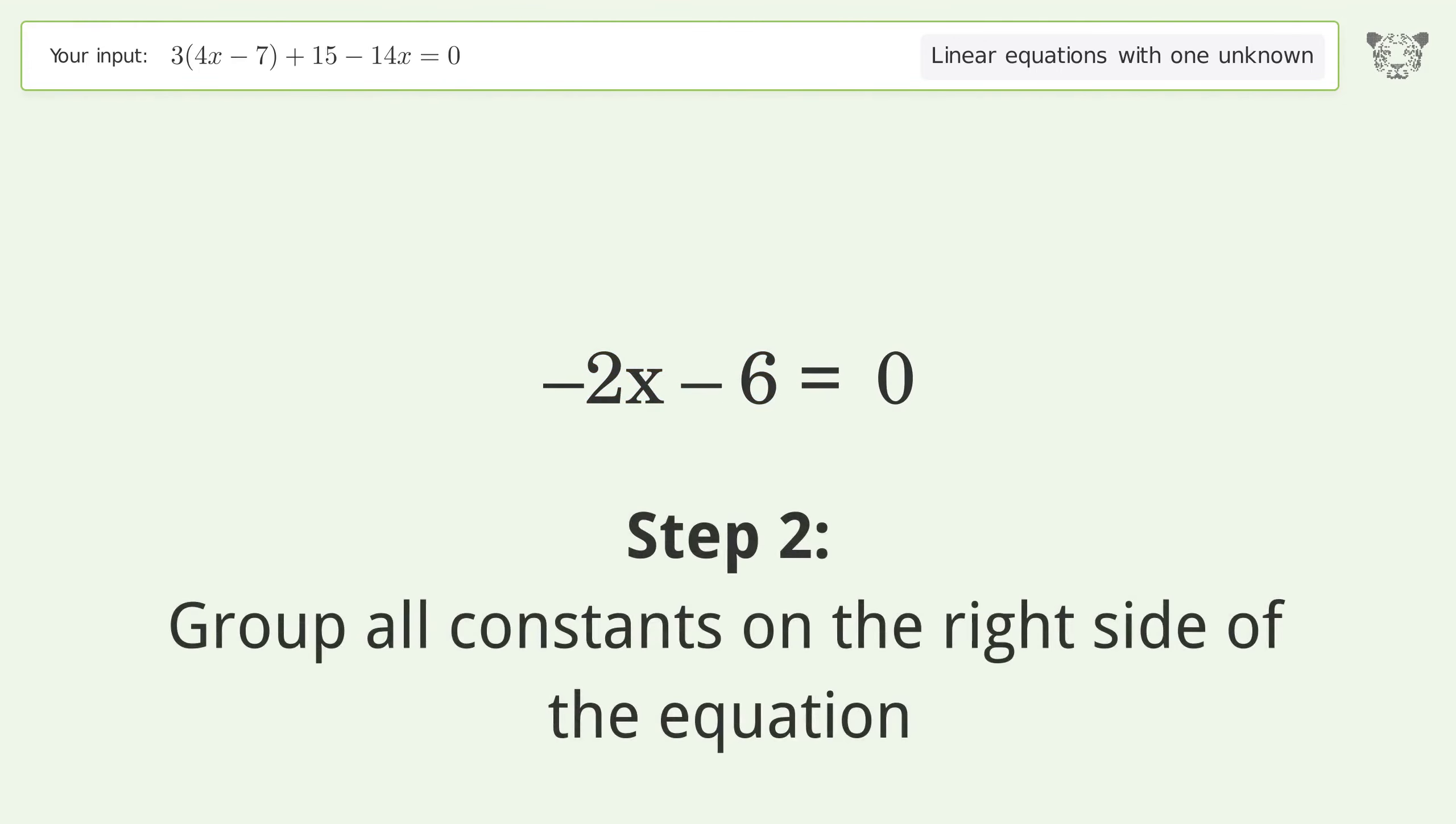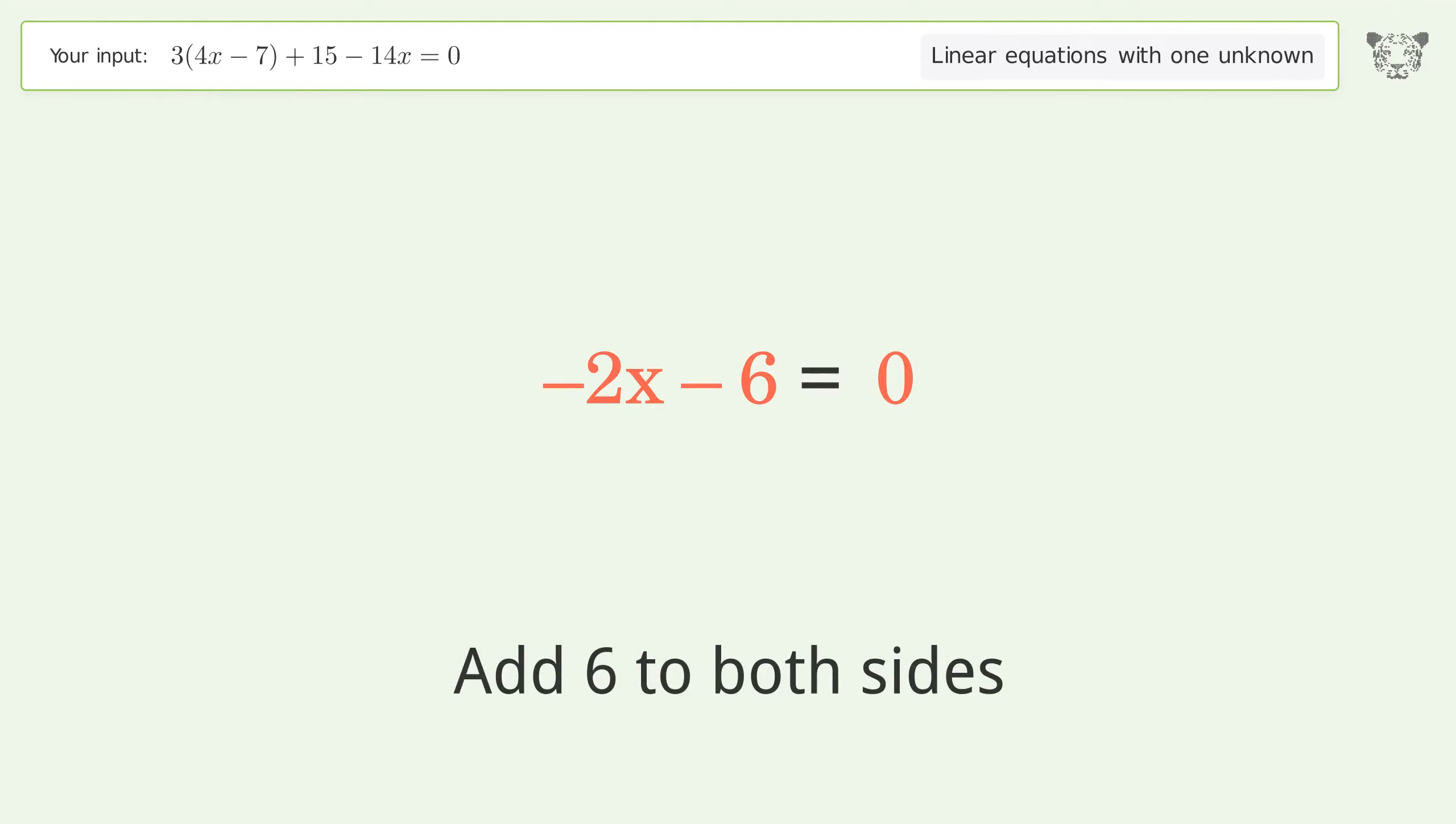Group all constants on the right side of the equation. Add 6 to both sides and simplify the arithmetic.